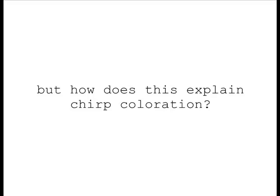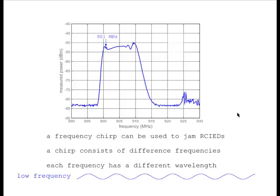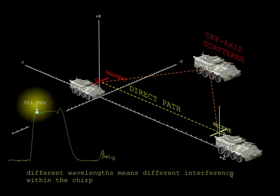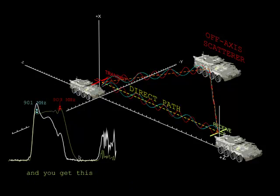How does this explain chirp coloration? Here are the ABCs. A chirp, which can potentially be used to jam radio-controlled IEDs, consists of different frequencies across its top. At each frequency, we have a different wavelength — at low frequency, a long wavelength; at high frequency, a shorter wavelength. Consider the low end of the frequency range: there is a direct path consisting of a certain number of wavelengths and an indirect path with two legs out to a reflecting off-axis vehicle and back to the receiver. At higher frequency, there are a different number of wavelengths in both the forward and reflected paths. Because there's a different number of wavelengths, we get a different interaction between the direct and indirect signals — a different pattern of cancellation or reinforcement.